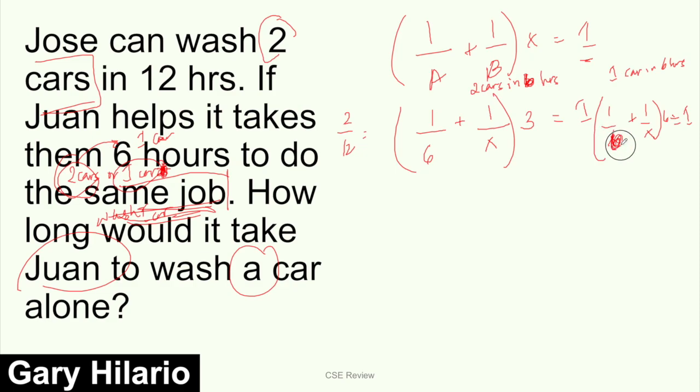But if it says Juan helps and it takes them 6 hours to wash a car, then you use this formula. So be careful with your reviewers and the stuff you see on the internet. Hopefully questions are complete so it's easier to avoid these kinds of situations. It's hard to solve when the question is unclear, right? It's like relationships - it's hard to answer 'what are we' when it's unclear. It should be defined. So let's solve this.